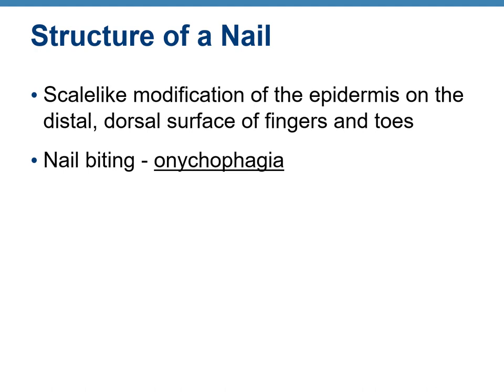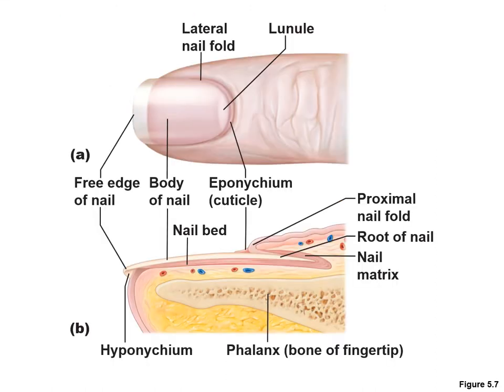A nail is a scale-like modification of the epidermis on the distal dorsal surface of the fingers and toes. Nail biting is called onychophagia — 'phagia' meaning to eat, as in macrophage.